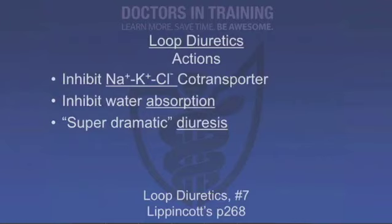Loop diuretics inhibit the sodium-potassium chloride transporter in the ascending limb of the loop. Once we inhibit this transporter, we leave sodium ions, potassium ions, and chloride ions in the filtrate — and water tends to follow sodium. So we don't have a lot of water absorption that would normally occur here. Downstream sites — the distal convoluted tubule and collecting ducts — are really unable to compensate for this high sodium chloride load, so the diuresis from these drugs is super dramatic.